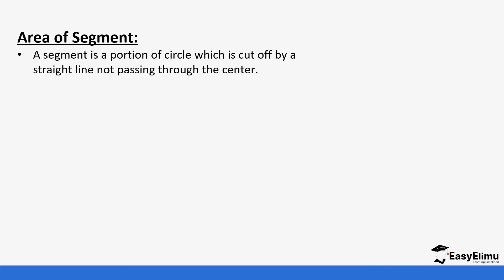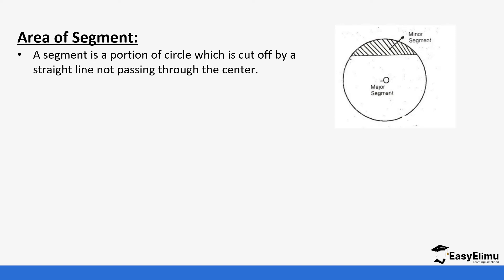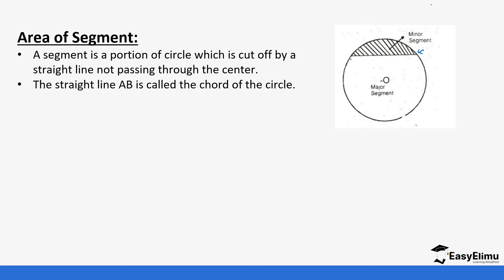A segment is a portion of a circle which is cut off by a straight line not passing through the center. You can see if we take a straight line that is not passing through the center, it forms a segment. We have the minor segment and the major segment. The line AB cutting through this circle is usually referred to as a chord.